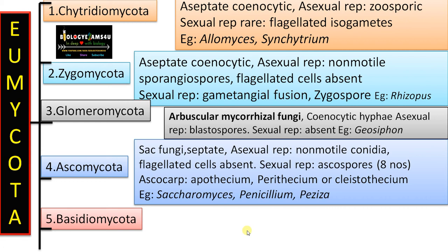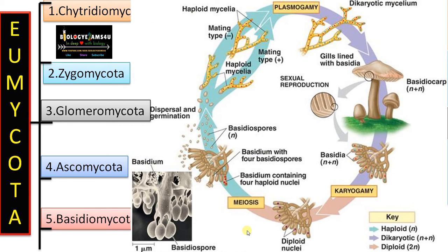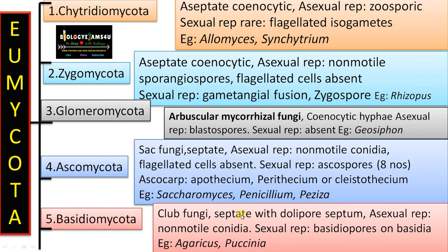The fifth phylum is Basidiomycota — the most advanced and most abundant group of fungi. Mushrooms belong to this group. The hyphae is well-developed and septate, with a special type of septum called a dolipore septum. Sexual reproduction is by basidiospores formed on a club-shaped structure called a basidium — that is why this fungus is called club fungus. The fruiting body is well-developed with a stalk and a head called a basidiocarp. Asexual reproduction is by conidia similar to Ascomycota. Examples include mushroom (Agaricus) and Puccinia, a parasite causing red rust of wheat.